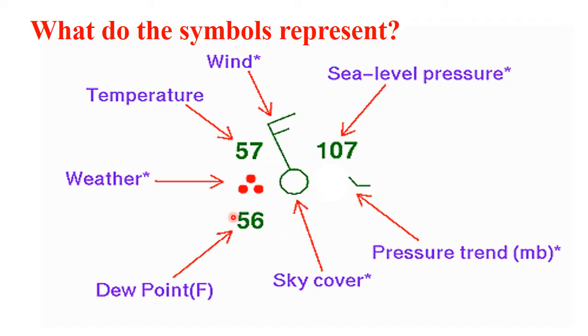The dew point is found on the lower left-hand side of the circle. The current weather can be found directly above the dew point. Symbols for current weather will be shown in two slides. The temperature is found above the current weather.